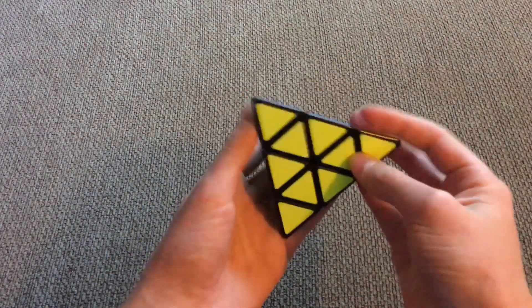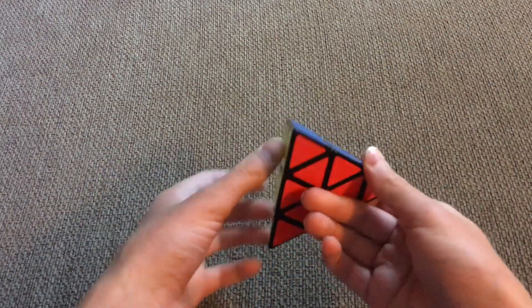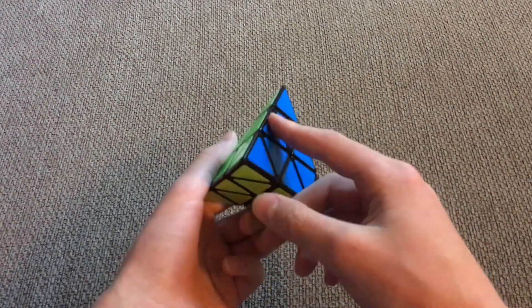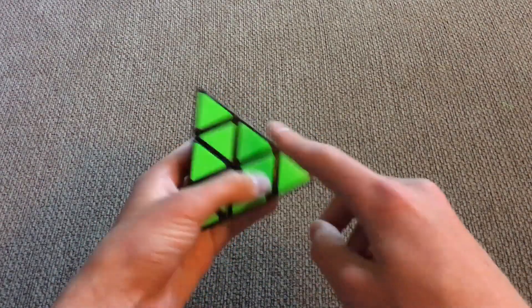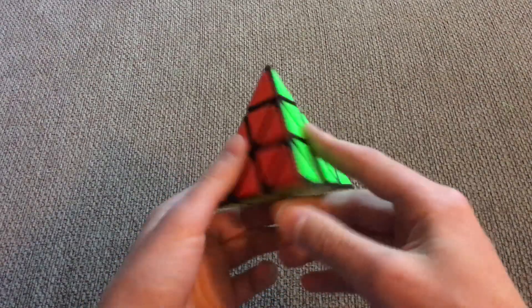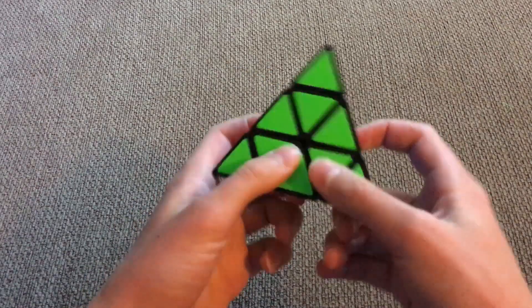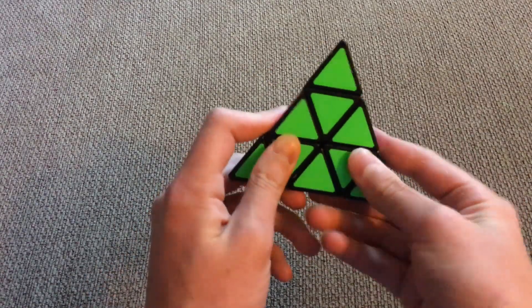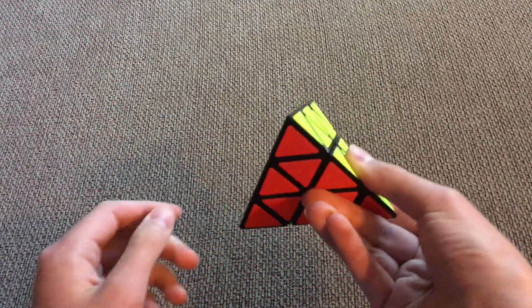Now, the thing about the Pyraminx is it's a puzzle that looks much harder to solve than it actually is. In actuality, you really only need to solve two layers, the first one and the second one, because the third one will just solve itself. Honestly, I would say it would probably take you around or less than an hour to memorize all the steps needed to solve this every time.